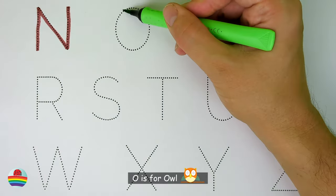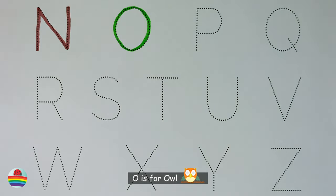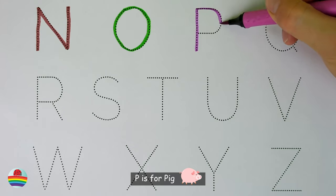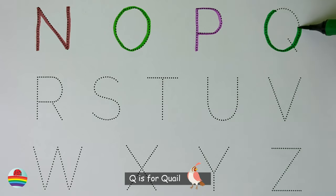O. O is for owl. O. P. P is for pig. P. Q. Q is for quail. Q.